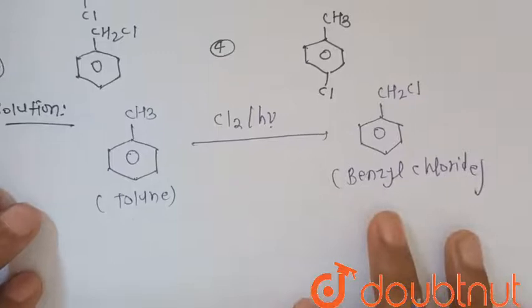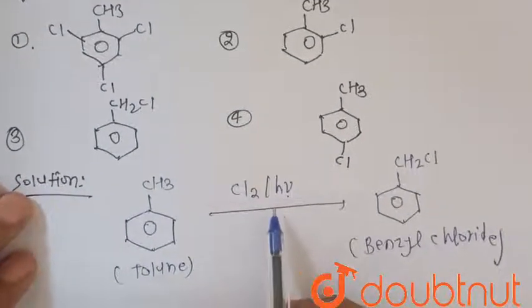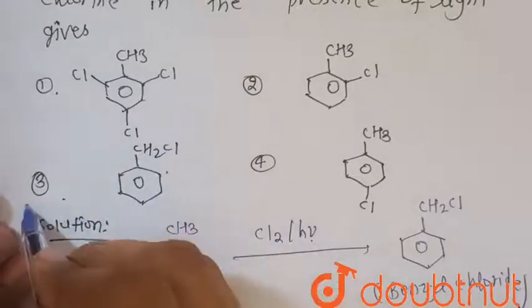When toluene reacts with chlorine in the presence of light or sunlight, it gives the benzyl chloride. So option number third, this is the benzyl chloride is the correct choice.